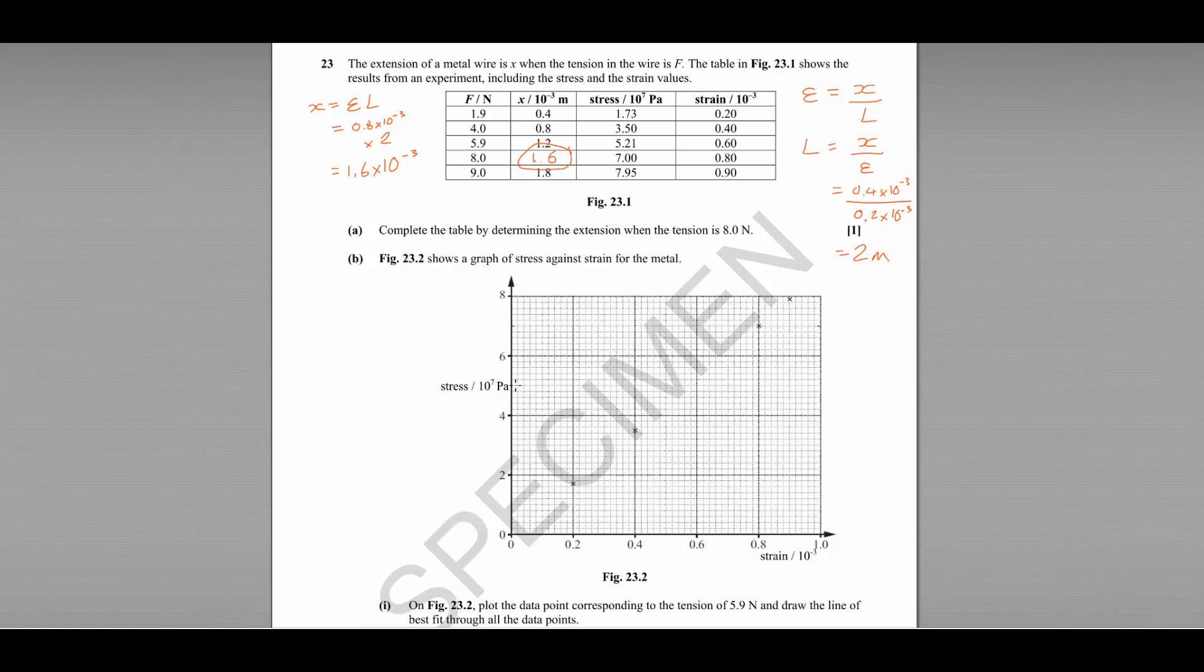So 5 is there, 5.2 would be this point here. And the strain is 0.6, which is here, which means that the point should be plotted here.